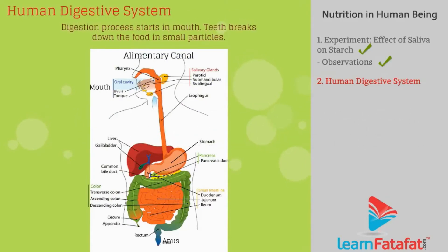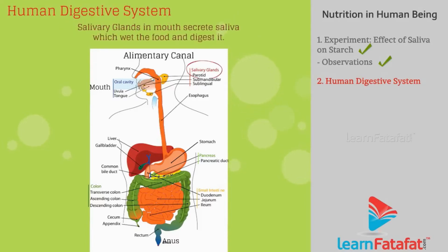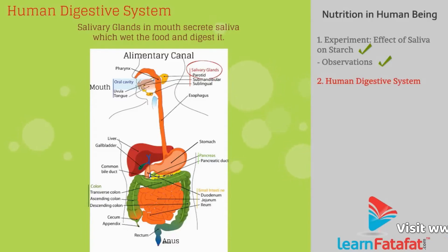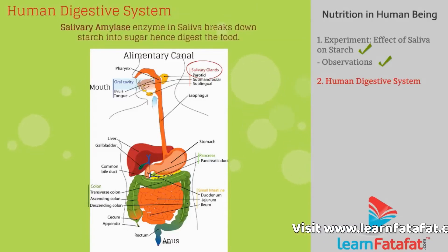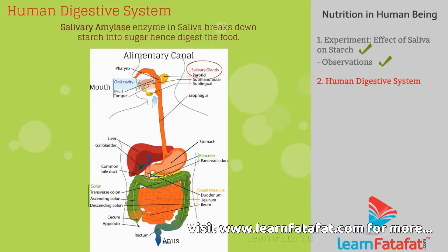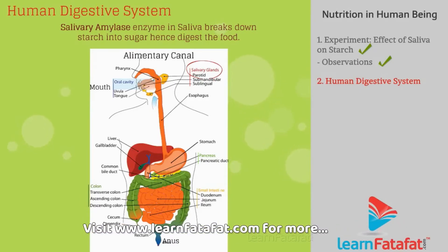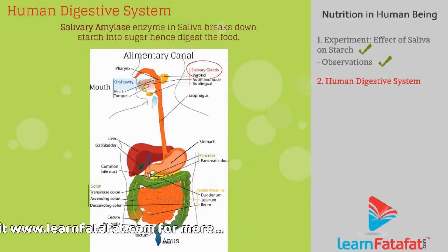The digestion process starts in the mouth. Teeth break down the food into small particles. Salivary glands in the mouth secrete saliva, which wets the food and digests it. Salivary amylase enzyme in saliva breaks down starch into sugar.